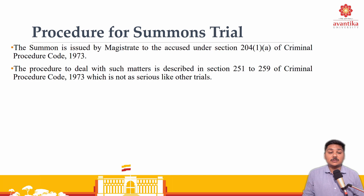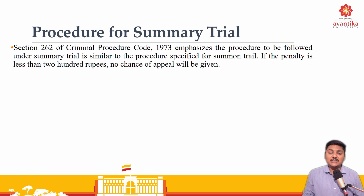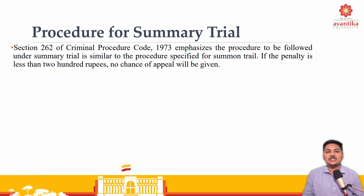Moving further to summon trials. The summon is issued by the magistrate to the accused under section 204 clause 1A of the Criminal Procedure Code. The procedure to deal with such matters is described in section 251 to 259 of CRPC, which is not as serious as other trials. Summon trial is basically for small offenses. Section 262 of CRPC talks about summary trials and emphasizes the procedure to be followed. It is very similar to summon trial. If the penalty is less than 200 rupees, no chance of appeal will be given. Summary trial and summon trial are very much similar, and they both are for small, petty offenses.